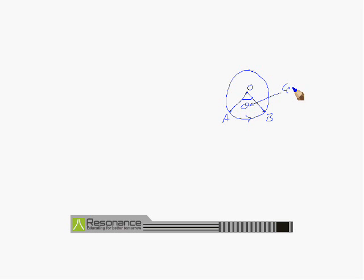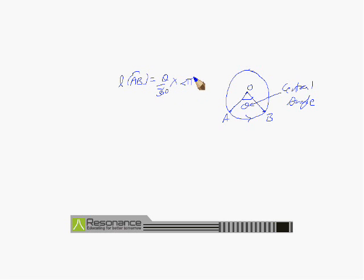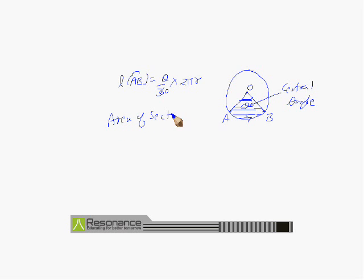The angle formed at the center is called the central angle. If we find the length of arc AB, it is given as theta upon 360 into 2 pi r. The region OAB is known as the sector of the circle, and the area of the sector is given as theta upon 360 into pi r squared.